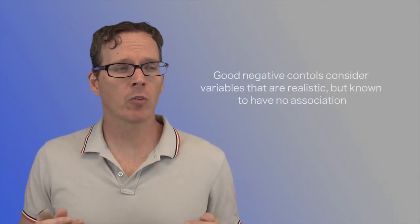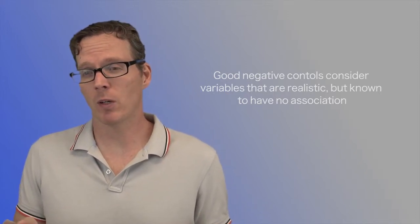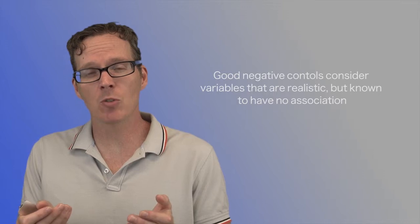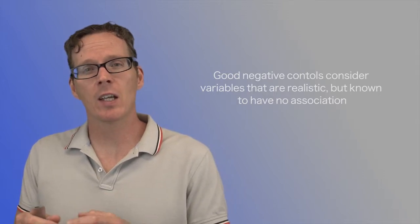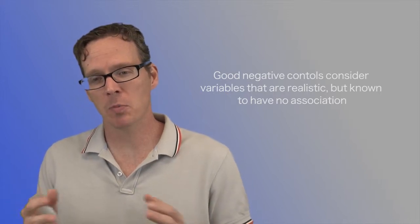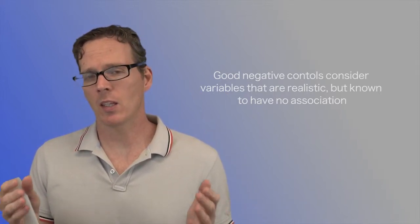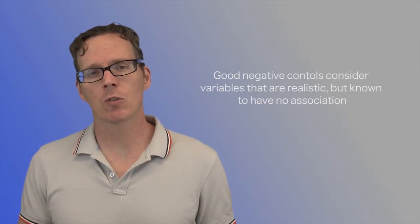So what are the characteristics of a good negative control? They are variables that are realistic but known to have no association. In this case, they had a perfect one. They had something that was in the image already that they could look at. It was subject to all the same processing experience that the rest of the brain got. So this was a good version of a negative control.